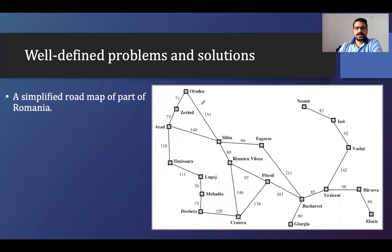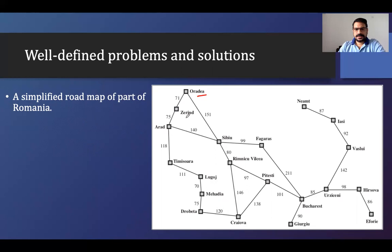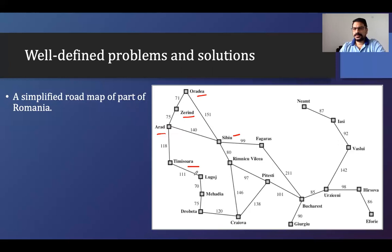Let's look at this example — a simplified roadmap of part of Romania. In Romania, we have all these cities as you can see: Oradea, Zerind, Arad, Timișoara, Sibiu, and others. These are different cities. In this graph, the city name is the node value and the edge gives how many kilometers the cities are apart from each other.